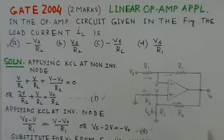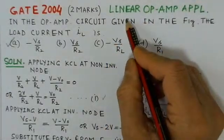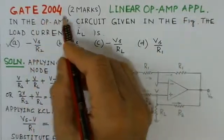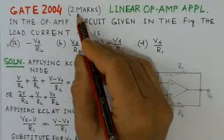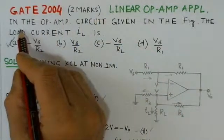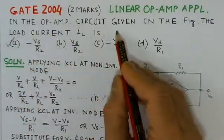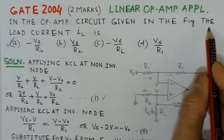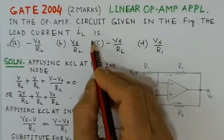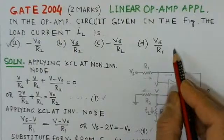This is the second problem on linear op-amp applications from GATE 2004, worth two marks. First we'll read out the problem and then give the video solution. In the op-amp circuit given in the figure, the load current IL is to be determined, and there are four options for this load current.